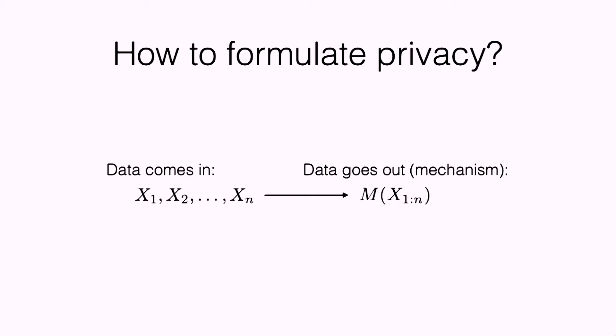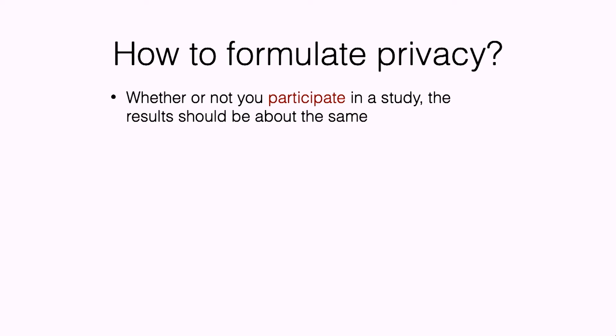The starting point has to be: how do you formulate what it means to be private? There were about 50 years of work on this, and around 2006 it got nailed down. I'll give you three plausible definitions. Data comes in — X1 through Xn — and goes into what we'll call a mechanism: your hospital collecting the data, Apple, Google, or whoever. They then release some kind of statistics, models, or whatever.